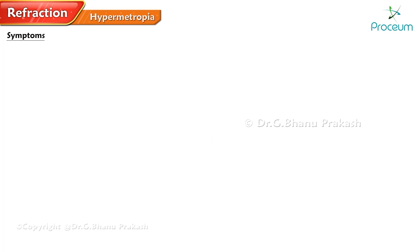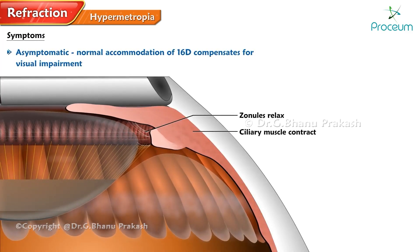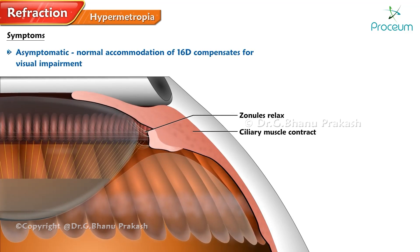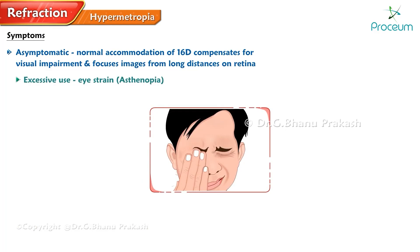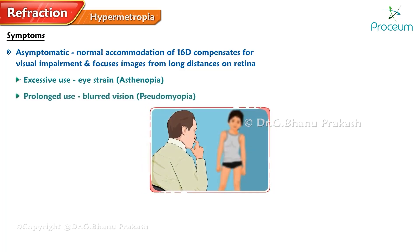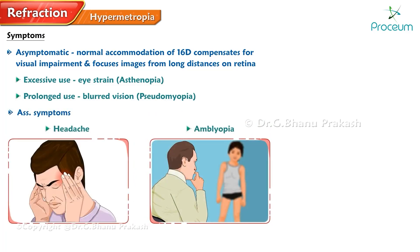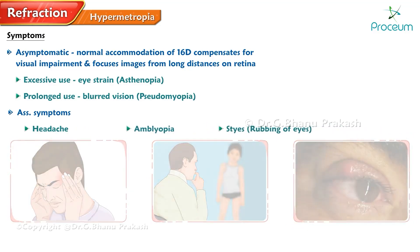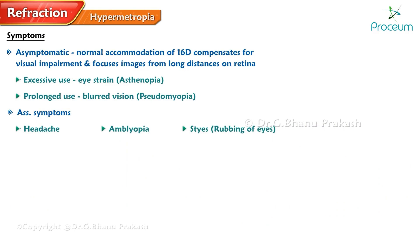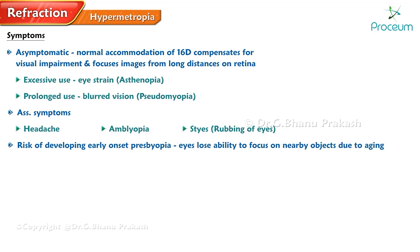In many cases, patients with hypermetropia remain asymptomatic, as their normal accommodation of 16 diopters compensates for the visual impairment. However, with excessive use of accommodation, patients may experience eye strain, also known as asthenopia. Prolonged use of accommodation can lead to accommodation spasms, causing blurred vision — a condition called pseudomyopia. Patients may also experience associated symptoms such as headaches, amblyopia, and frequent styes due to rubbing of the eyes. Hypermetropics are also at risk of developing early-onset presbyopia, where the eyes lose their ability to focus on nearby objects due to aging.